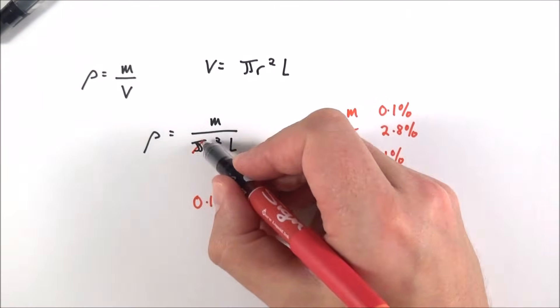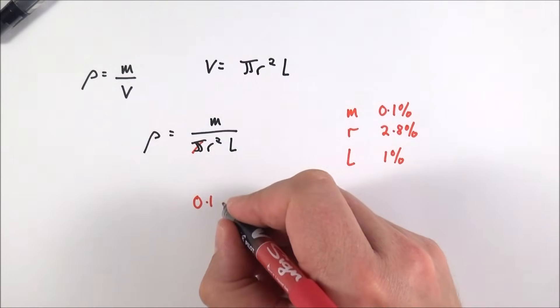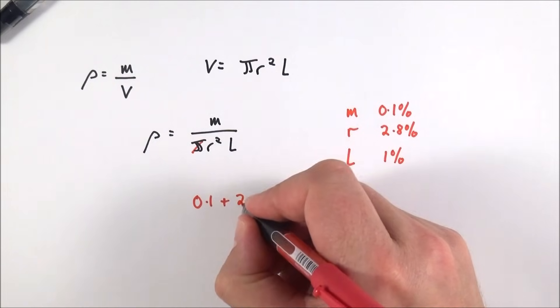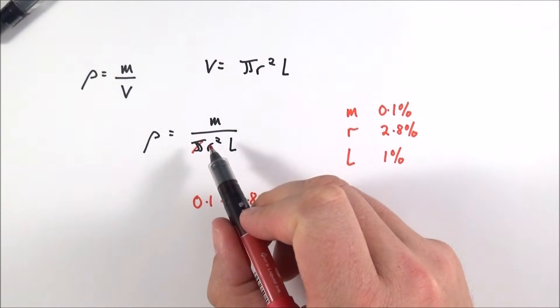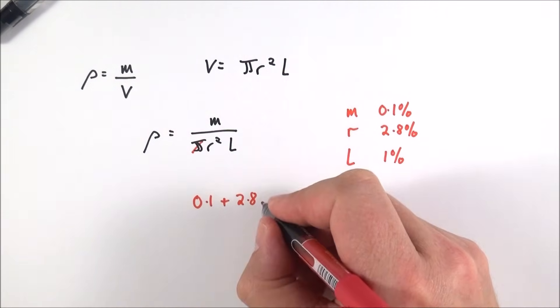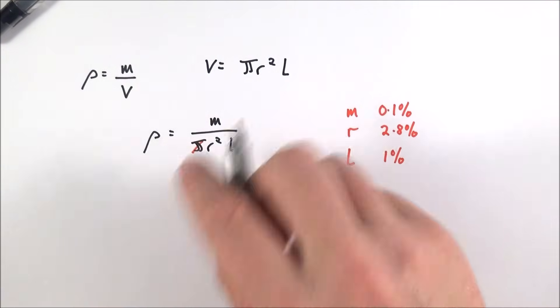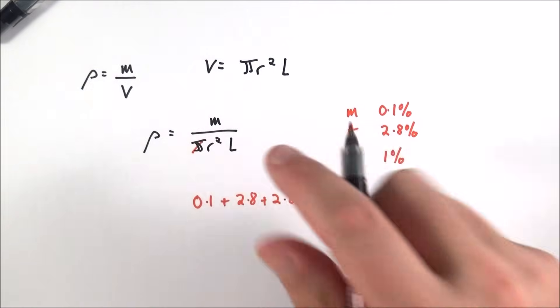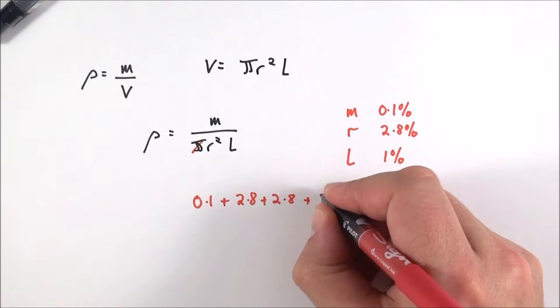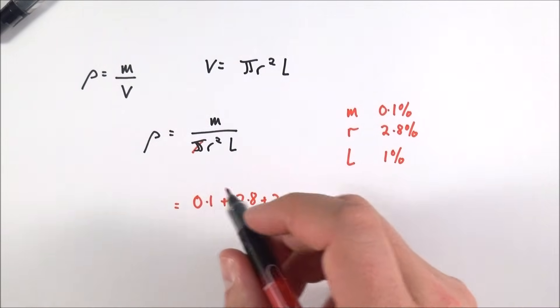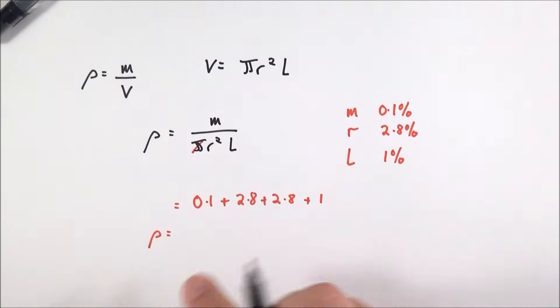Here we've got the mass recorded once, so that's an uncertainty of 0.1 percent. Pi has no uncertainty, but we add the uncertainty in our value of r, which is 2.8. But here we multiply by r again, and in actual fact that means the uncertainty gets even bigger. The uncertainty in L is one percent, so we add one percent onto that. My combined uncertainty for density is going to be equal to 6.7 percent.